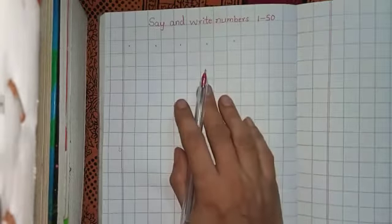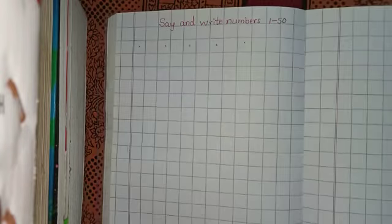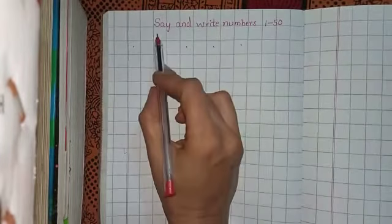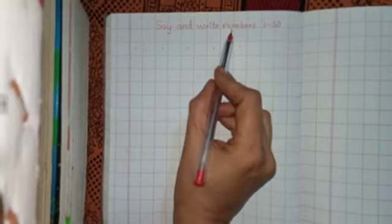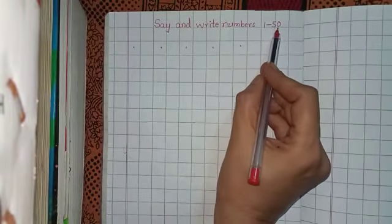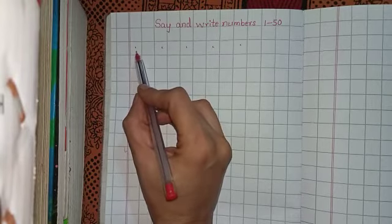In this book, we will write the numbers 1 to 50. See here children, in this book, you have to write the heading: say and write numbers 1 to 50. You should start from here. While writing, you should say and write.